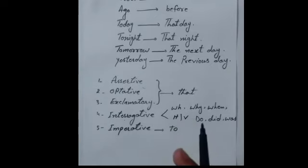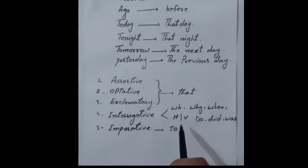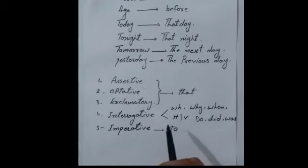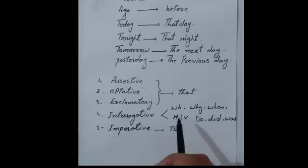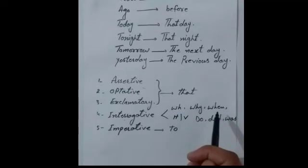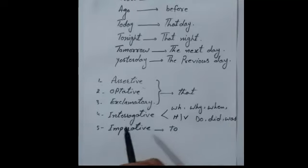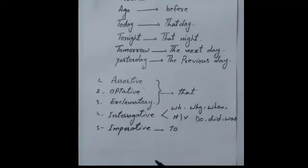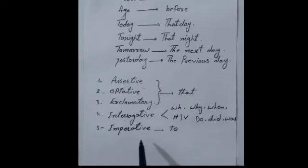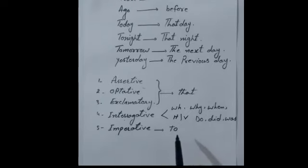Interrogative sentences are either WH-word questions or helping-word questions. For WH-word interrogatives, you use the WH-word as the conjunction. If the question starts with a helping word, then you use 'if' or 'whether' as the conjunction, followed by the first form of the verb.